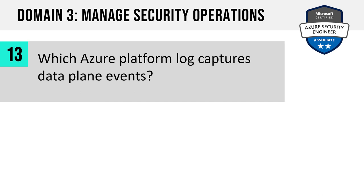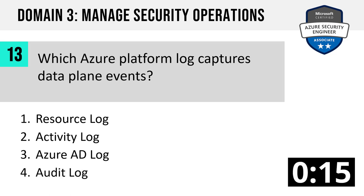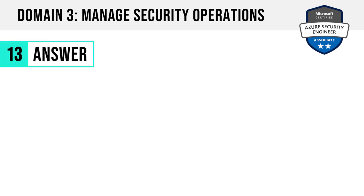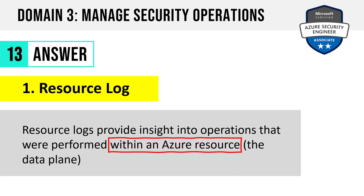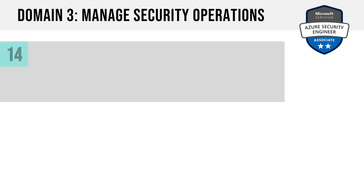Number 13. Which Azure Platform Log captures data plane events? Resource Log, Activity Log, Azure AD Log, or Audit Log? We talked about control plane events just a bit ago. The answer is one: Resource Log. The resource logs provide insight into operations that were performed within an Azure resource — the data plane. Going back to the earlier question, activity logs provide information about control plane operations like create, update, and delete operations taken on the resource itself.